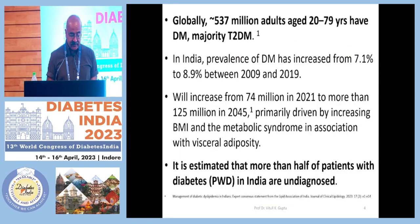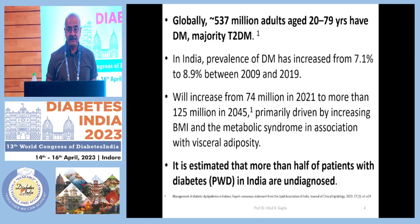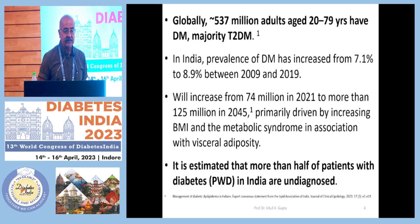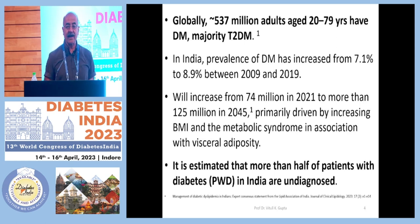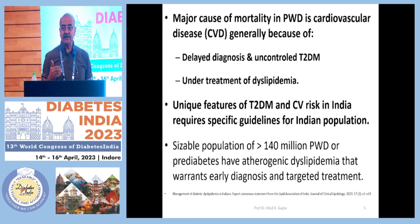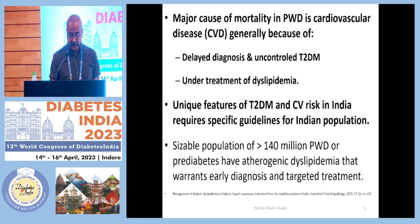Globally, about 500 million adults aged between 20 to 79 years have diabetes mellitus, and the majority of them are type 2 diabetes. It is estimated that more than half of the patients with diabetes in India are undiagnosed. The major cause of mortality in diabetes is cardiovascular disease, generally because of delayed diagnosis, uncontrolled diabetes mellitus, and under-treatment of dyslipidemia — which is my topic today.